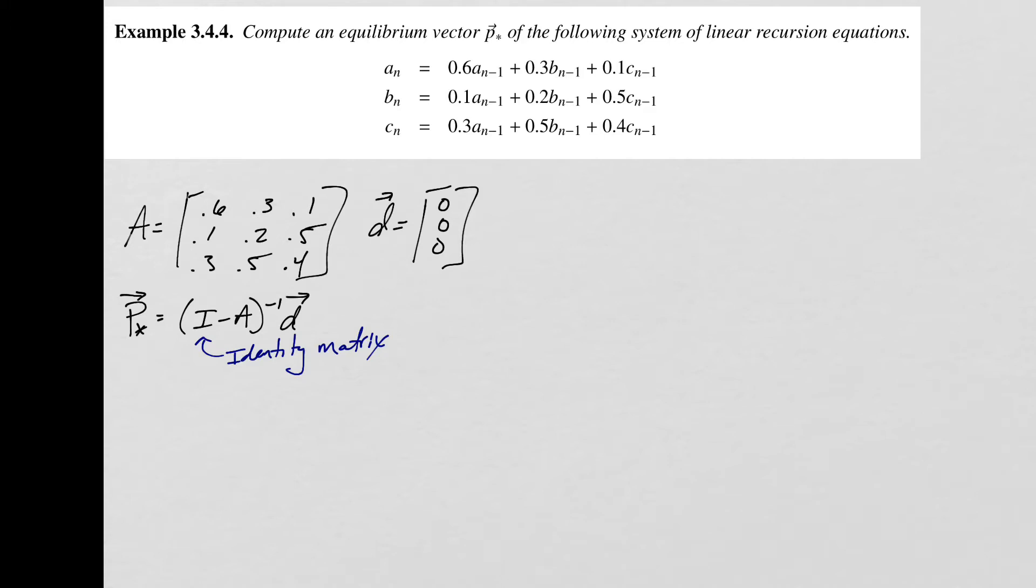If I'm doing this in Mathematica, the technique that I like to use is to create this variable IA, which is just going to be the command identity matrix. In this case, we're going to use bracket 3 minus A. So that gives me this variable IA.